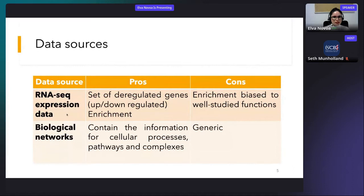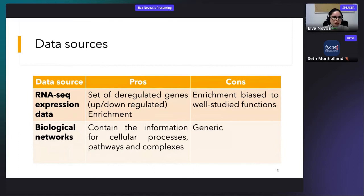RNA expression data is normally used to find the set of deregulated genes — the list of genes whose expression varies in patients as compared to controls. We can then use that set of deregulated genes to look for an enrichment of functions, seeing if any annotated functions appear more frequently than expected by chance. However, we do not know the function for all genes, and this enrichment analysis is biased to well-studied functions. The second data source, biological networks, contains information for cellular processes, pathways, and complexes — but they are generic, so without context we cannot know which processes are affected in the disease under study.